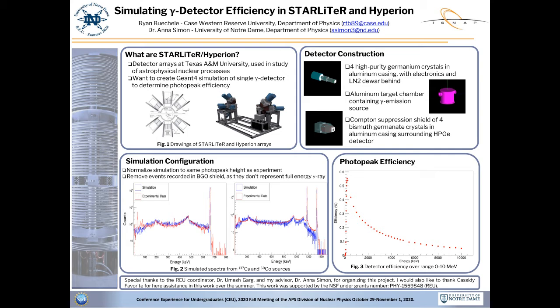Starlighter, seen in the schematic on the left of figure one, includes six gamma ray detectors in a circle around a source, while Hyperion, in the CAD mock-up to the right of figure one, has up to 14 detectors in a hemisphere. My goal this summer was to simulate a single one of these detectors in Geant4 and determine the photopeak efficiency of the detector as a function of energy.